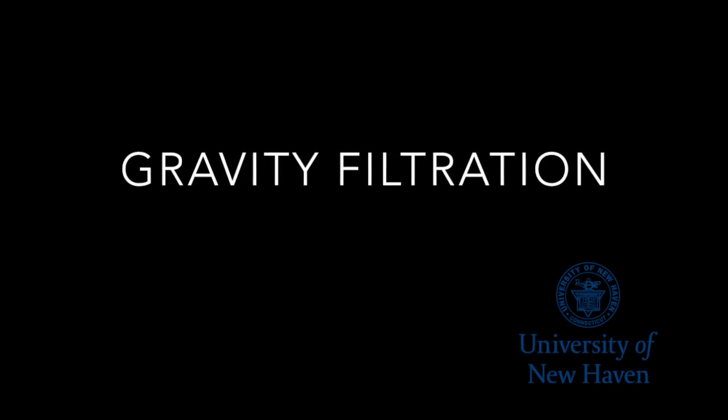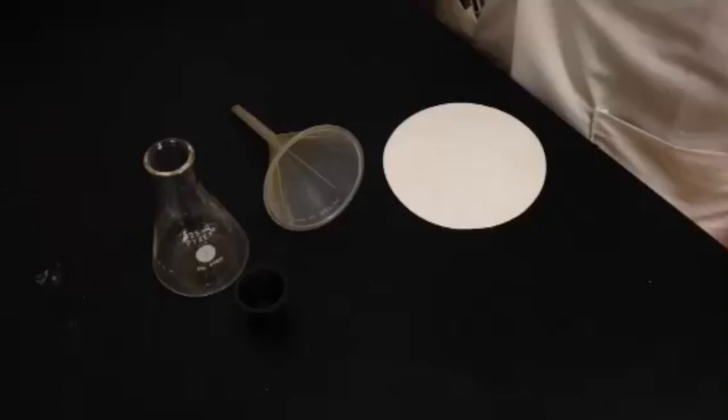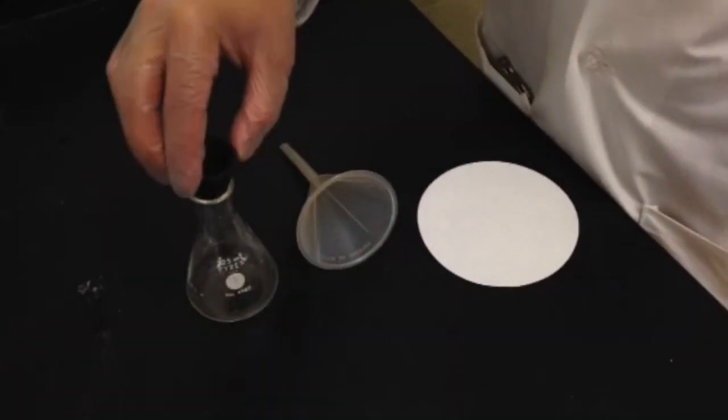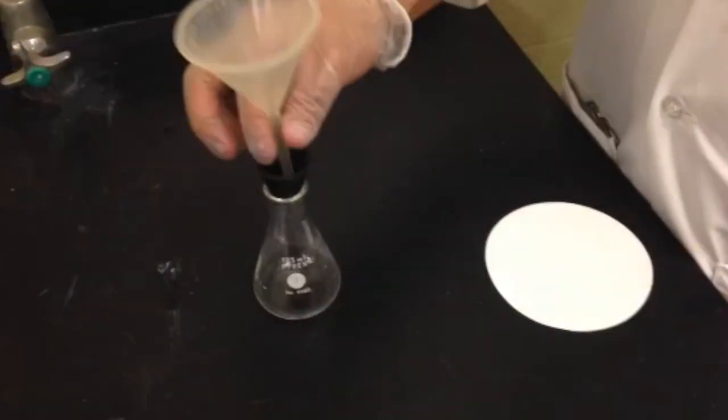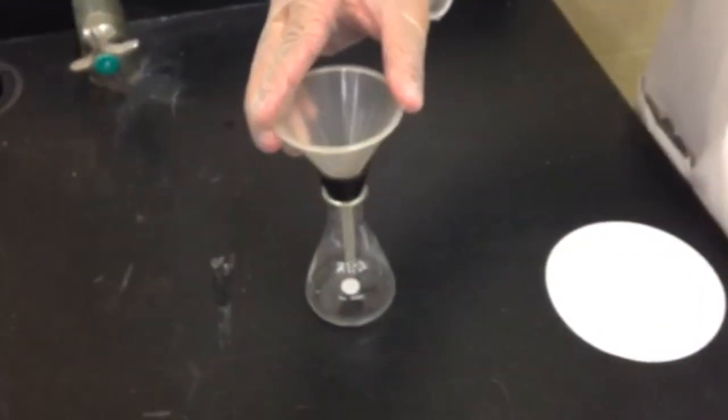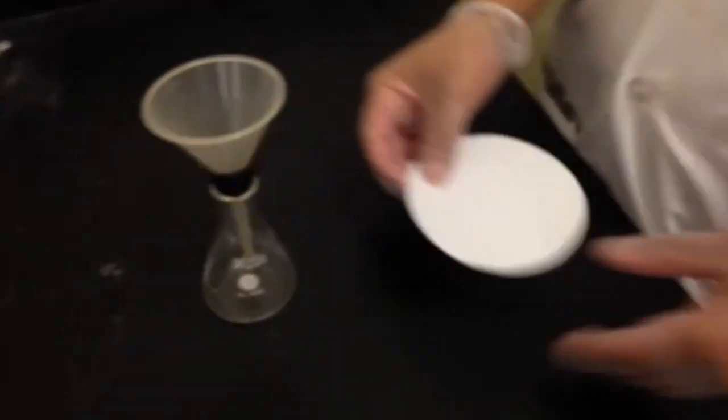In this video you will learn how to use gravity filtration to separate a solid from a liquid. Set up the apparatus by placing a stopper in the neck of an Erlenmeyer flask and inserting a small funnel.